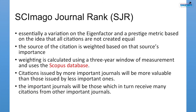SJR is the Scimago Journal Rank. It is essentially a variation on the Eigenfactor and is a prestige metric based on the idea that all citations are not created equal. In this metric, the source of a citation is weighted based on the importance of the source journal. The weighting is calculated using a three-year window of measurement and uses the Scopus database. Citations from more important journals will be more valuable than those from less important journals.